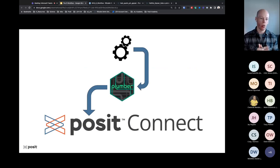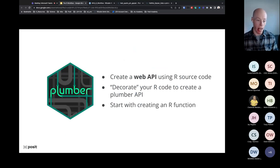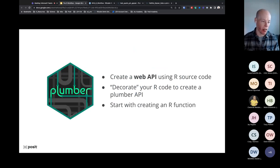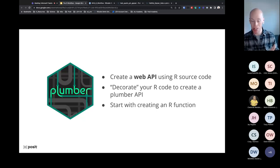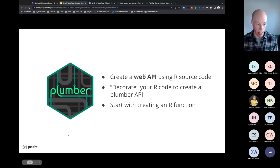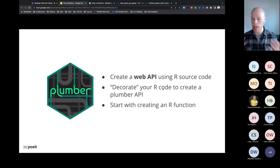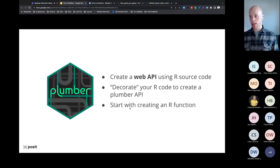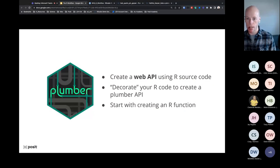We're going to address that using a tool called Plumber. Plumber is a way for you to create APIs using nothing but R code. When I first started my R coding journey, the concept of an API was so foreign and scary to me, but Plumber makes things really easy. The one thing you need to know for creating a Plumber API is you need to know how to write an R function — we'll go over that now.